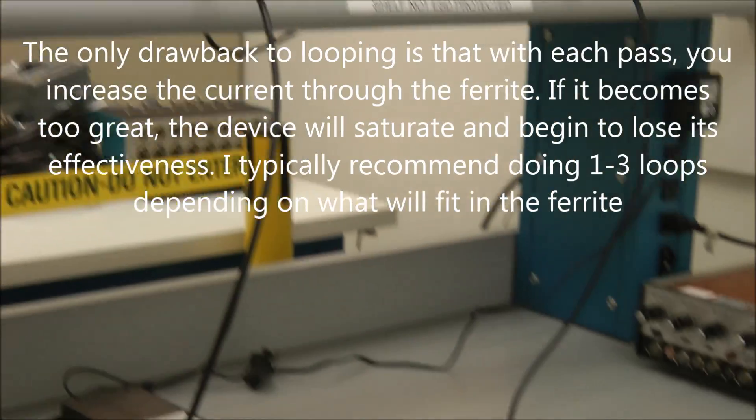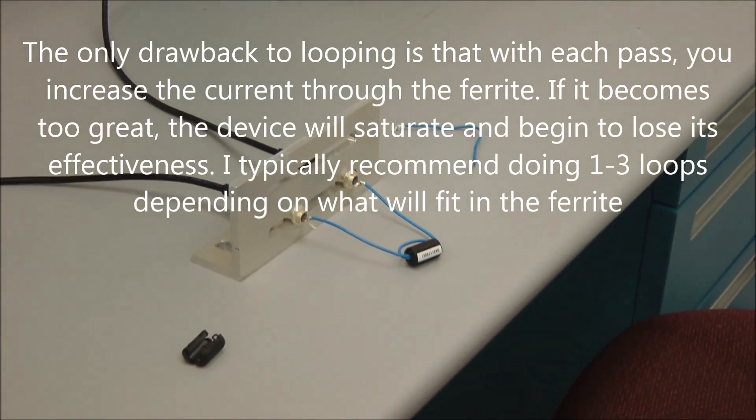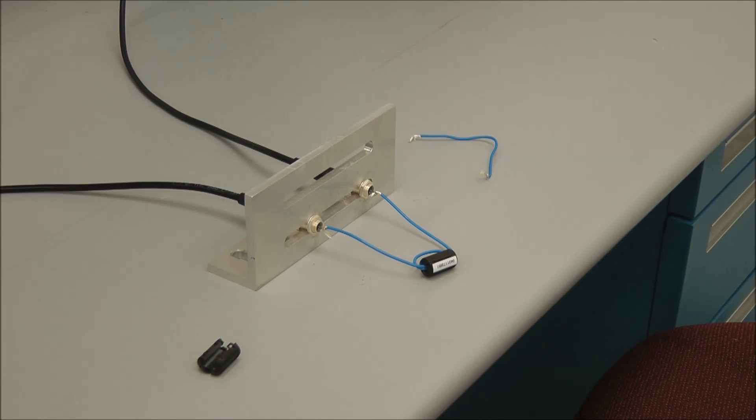Now, I will say that we could have also put additional ferrites. We could have put both ferrites on the cable, for example. But actually, you don't get as much benefit from multiple ferrites as you do from the looping. Two ferrites doesn't do quite as well as a ferrite looped twice.